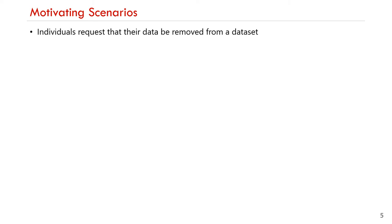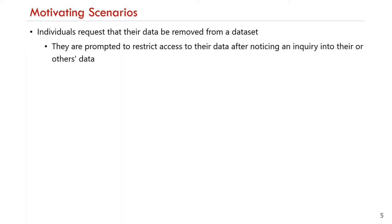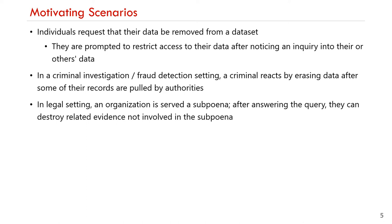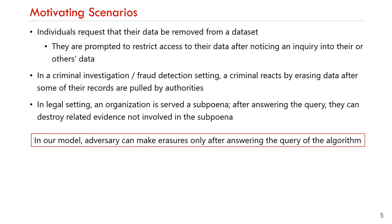We consider the following motivating scenarios for studying this adversarial model. The first scenario considers the case when individuals request that their data be removed from a data set, as enabled by the EU General Data Protection Regulation. In particular, such requests can be adaptive to the algorithm's queries, as individuals can be prompted to restrict access to their data after noticing an inquiry. Another scenario is that of a criminal investigation or fraud detection setting, where a criminal could react by erasing their data after some of their records are pulled by authorities. Finally, in a legal setting, when an organization is served a subpoena, it is legally bound to answer the query; however, afterwards they can destroy related evidence not involved in the subpoena. Notice that in all of these scenarios, the erasures happen after the algorithm receives an answer to its query, which is compatible with our modeling choice.